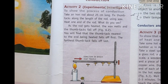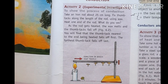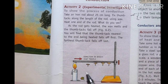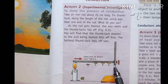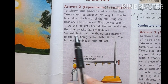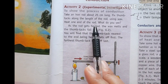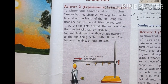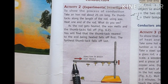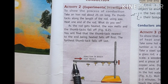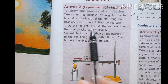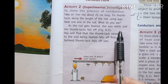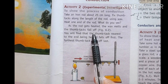Basically, 5 thumbtacks are attached to this rod with the help of wax. Now heat one end of the rod. As the rod gets heated, the wax melts and the thumbtacks fall off.